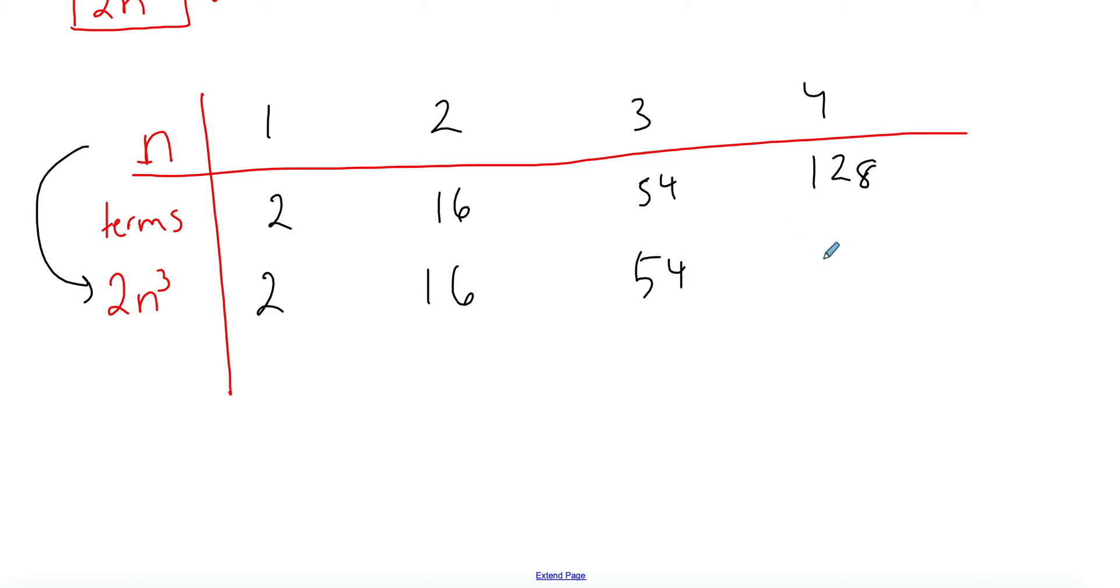The last row will be the terms minus 2n³. So row 2 minus row 3, you subtract them from each other.